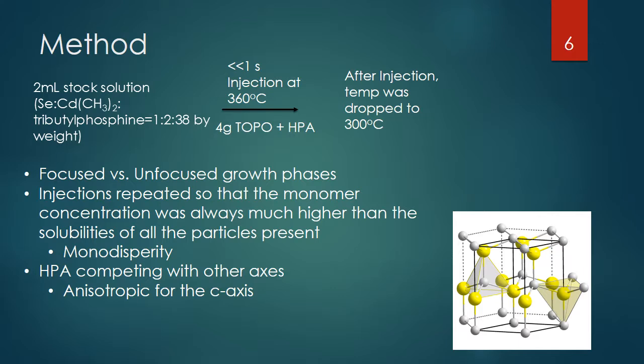They figured out that the biggest difference was the monomer concentration — the concentration of selenium, cadmium, and tributyl phosphine. Right at injection the concentration would be very high. As cadmium and selenide grew onto the nanoparticles, this concentration would drop. When it crossed a critical threshold, the concentration was so low that growth of all axes was about equal, giving that uniform growth they didn't want.